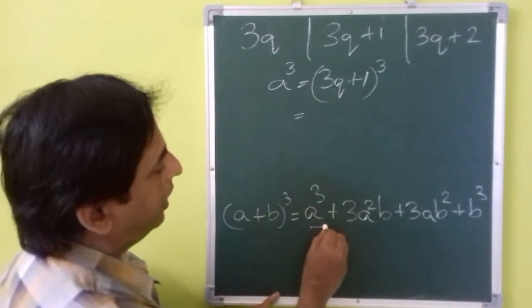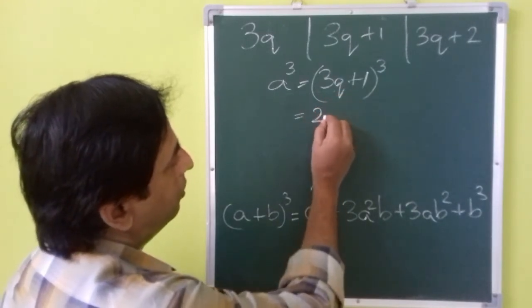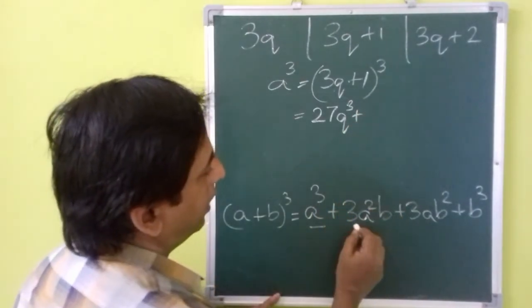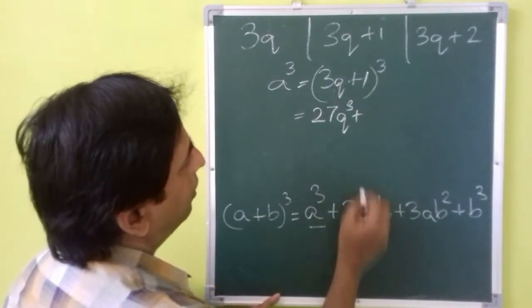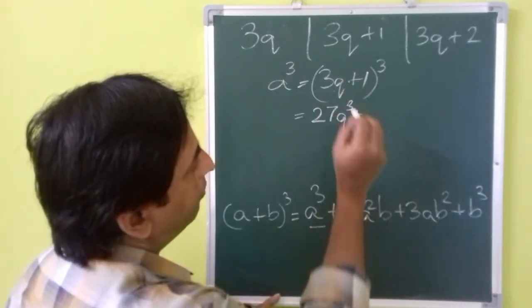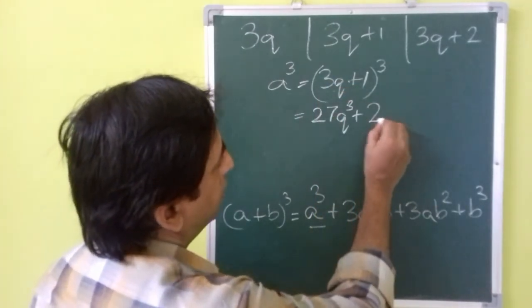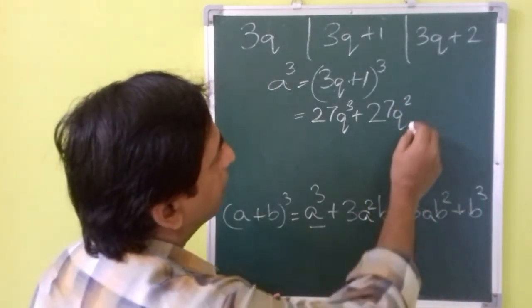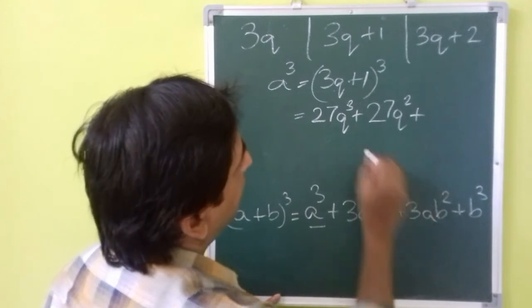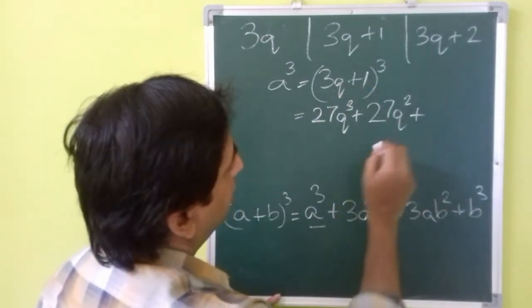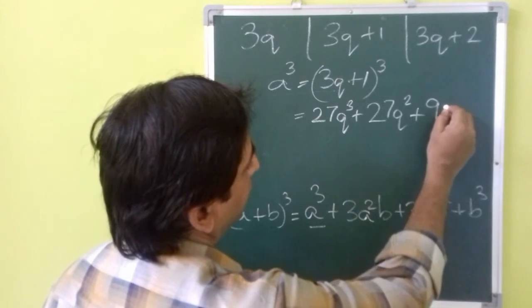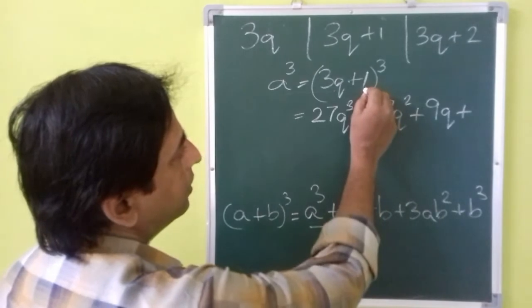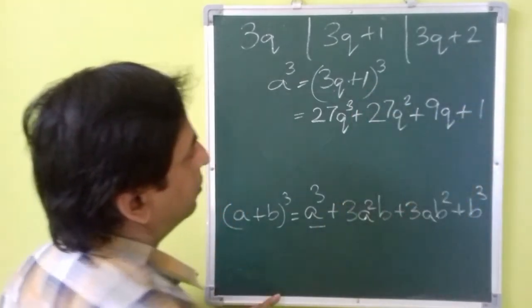The first term is a cube, that is 3q to the power 3, which will be equal to 27q cube, plus 3a square. 3 into a square is 9q square. Plus 3ab square, that is 3 into 3q into 1, that is 9q, plus b cube, plus b cube is 1.